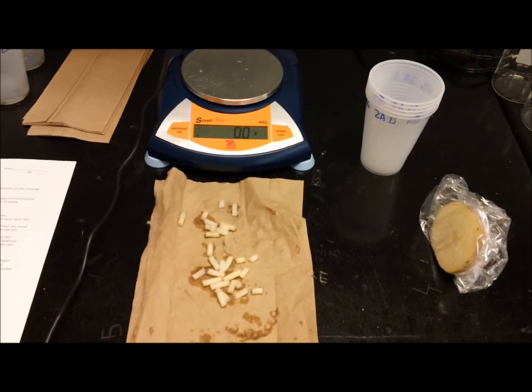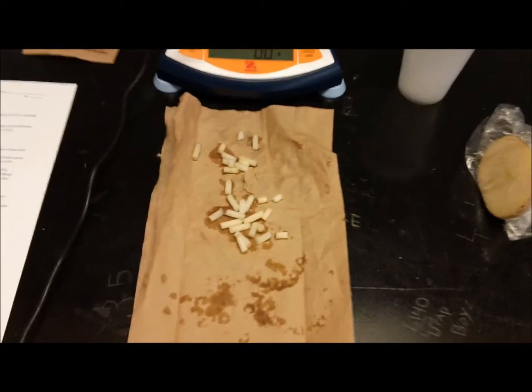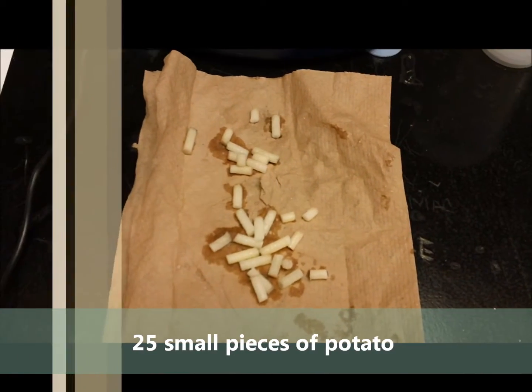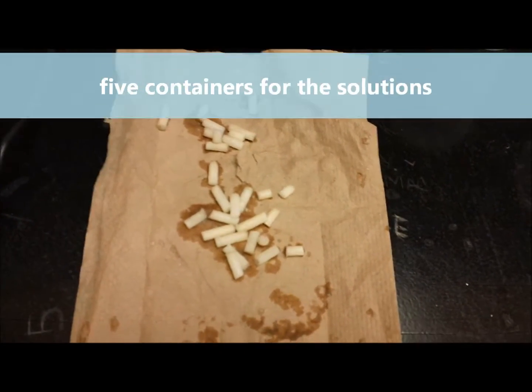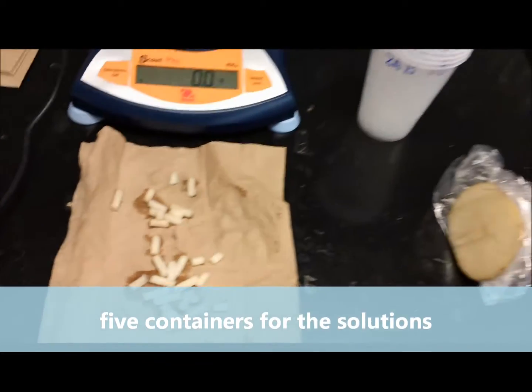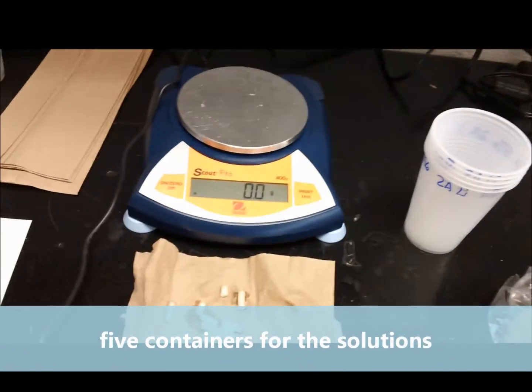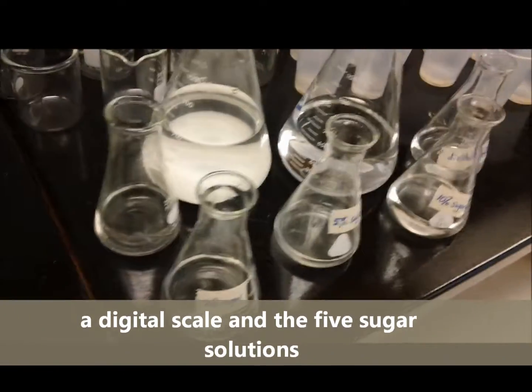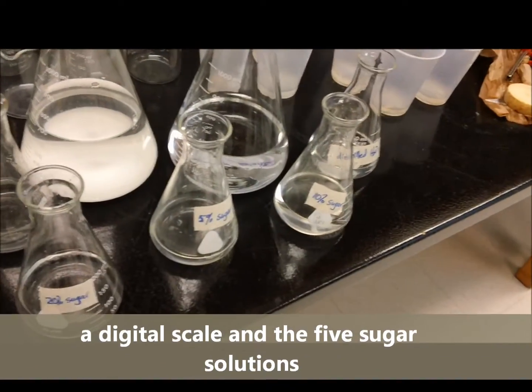To do the osmosis and potatoes lab, you will need 25 small pieces of potato. These were cut out using a cork borer, but you can just dice them into small squares. You'll also need a container, a digital scale, and your five different sucrose solutions.